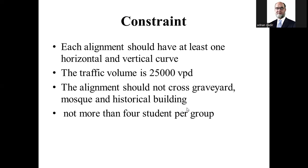The constraints are that each alignment should have at least one horizontal and one vertical curve. The traffic volume is 25,000 vehicles per day. The alignment should not cross graveyard, mosque, or historical buildings — if there is such a structure, we have to provide a bypass curve. This assignment will not be accepted for groups having more than four members.